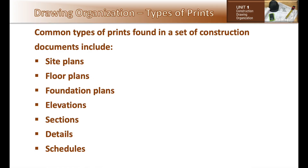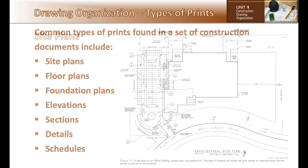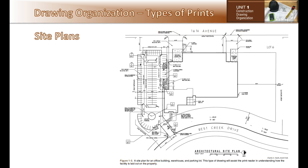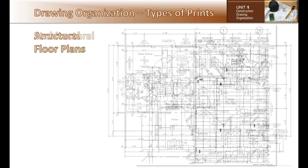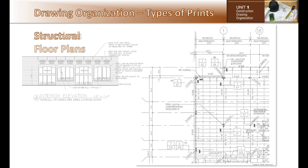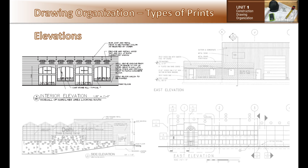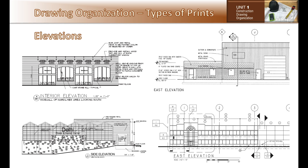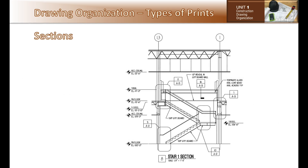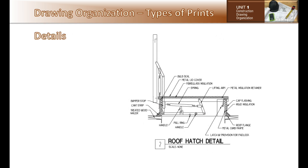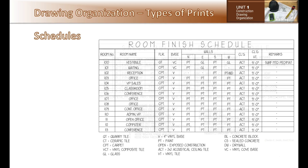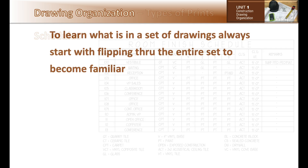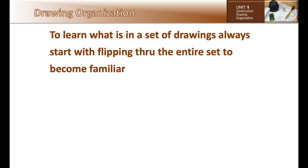Common types of prints found in a set of construction documents include site plans, architectural and structural plans, both interior and exterior elevations, sections, details, and schedules such as door and room finish schedules.